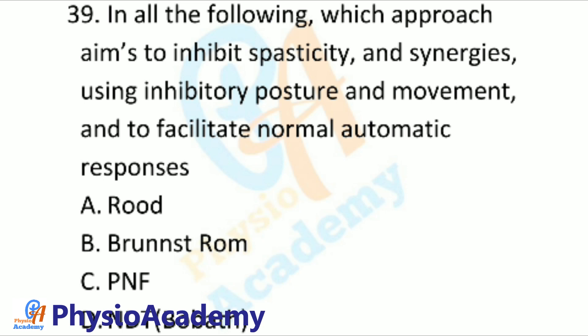Question number 39: In all the following, which approach aims to inhibit spasticity and synergies using inhibitory posture and movement, and to facilitate normal automatic responses? Option A: Brood. Option B: Brunnstrom. Option C: PNF. Option D: NDT or Bobath.